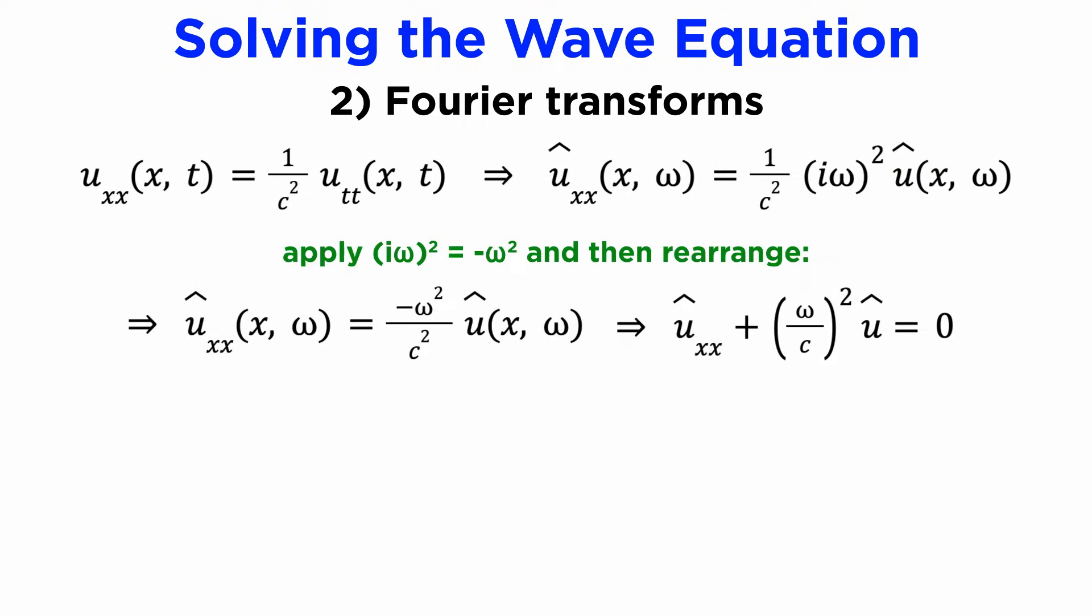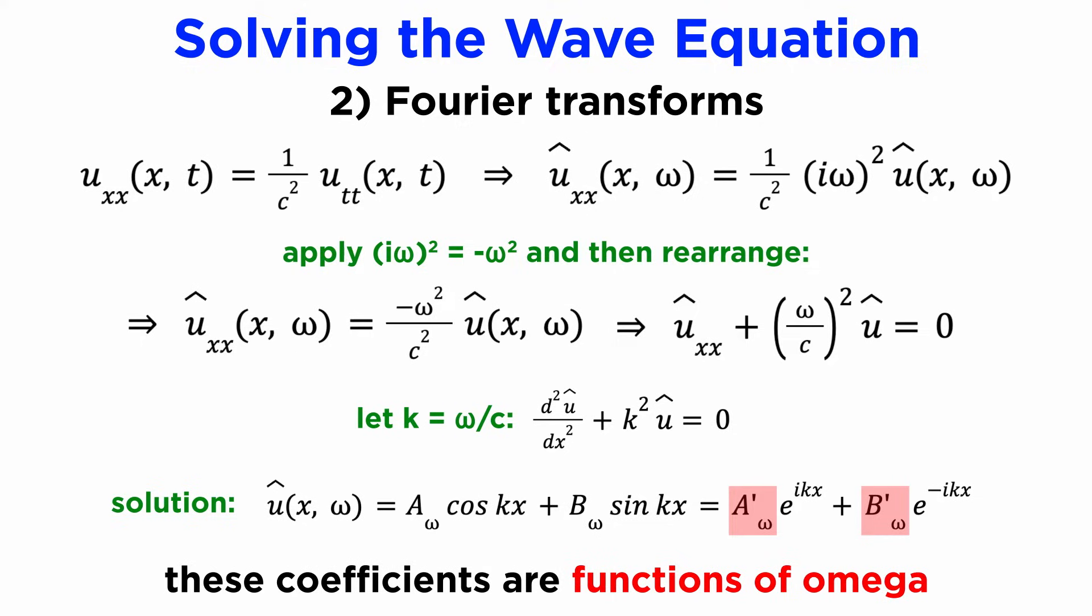We can rearrange to get an ordinary differential equation in our transformed solution u hat, which is now a function of x, but is also parameterized by our frequency variable omega. In accordance with before, we can let k equal omega over c and solve the ODE to get our transform in terms of trig functions, which this time we will actually prefer using the complex exponential form of the complementary solution using Euler's formula. Note that the coefficients a and b will depend on omega and can be viewed as functions of omega.